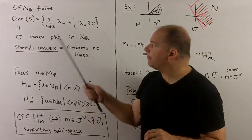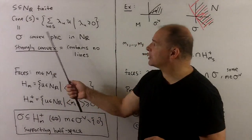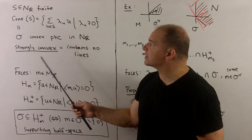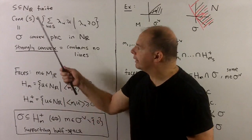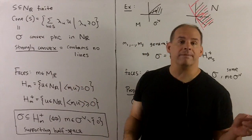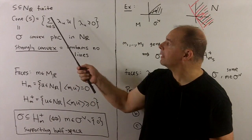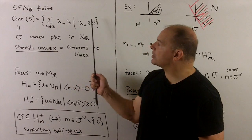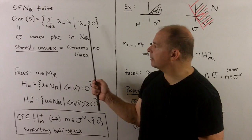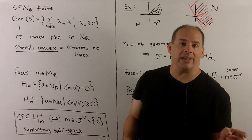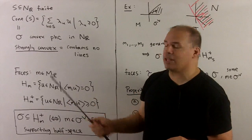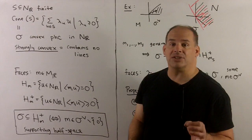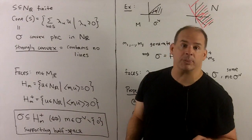Let's recall: sigma will be a convex polyhedral cone in N_R — we usually drop the word convex. To get these, we start with a finite set S in N_R and take the cone generated over S, so all sums of that type. We'll say sigma is strongly convex if it contains no lines, meaning no non-zero vector subspaces.